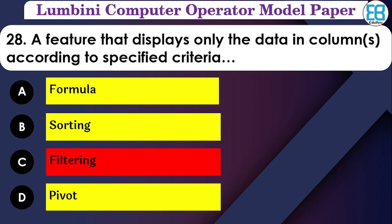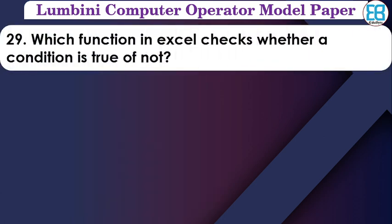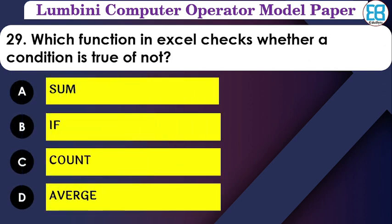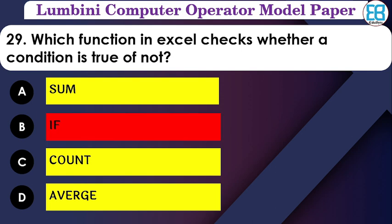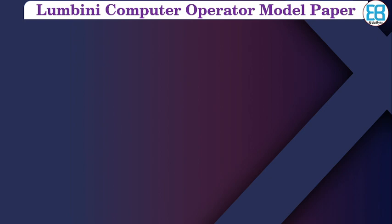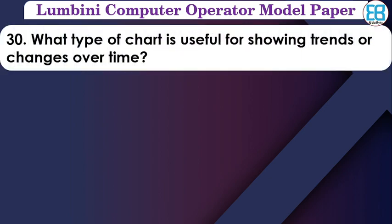Which function in Excel tests whether a condition is true or not? The options are: AND, SUM, IF, COUNT, AVERAGE. The correct option is IF — the IF function checks if a condition is true; if true it returns one value, else another.